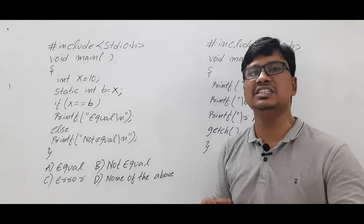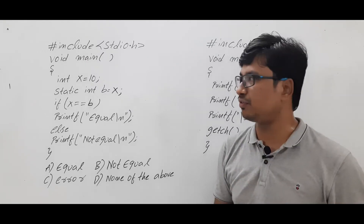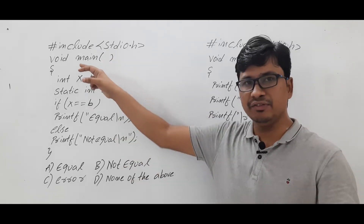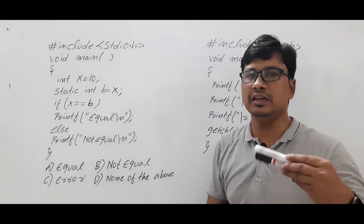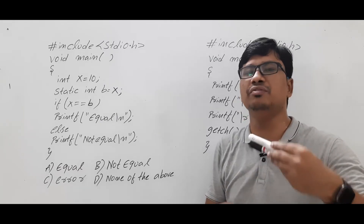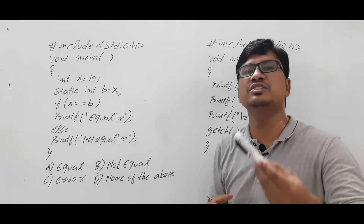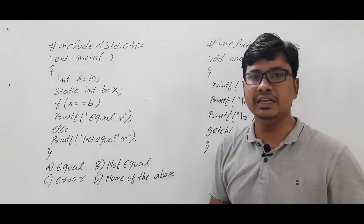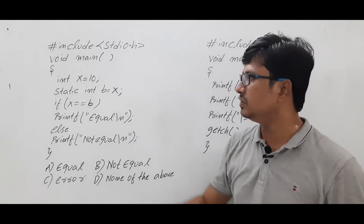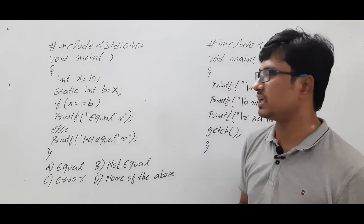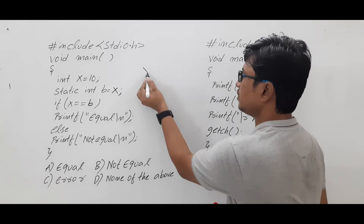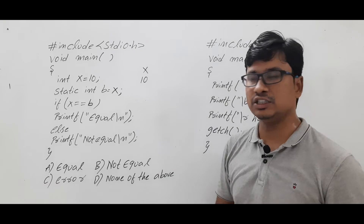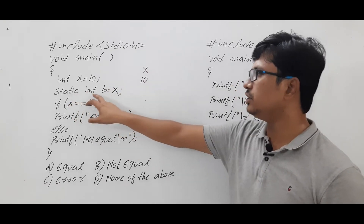They have given '#include stdio.h', which is a standard input/output header file, and 'void main'. Main is a predefined function, and every function has a return type. The return type specifies what kind of value the function will return after executing. If you specify 'void', it means this function does not return any value. Then 'int x = 10' — x is an integer variable and 10 is an integer constant. Then 'static int b = x'.